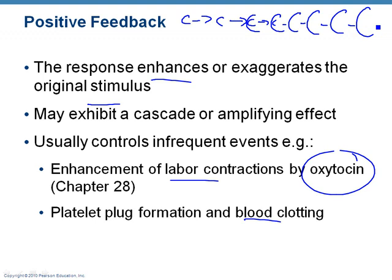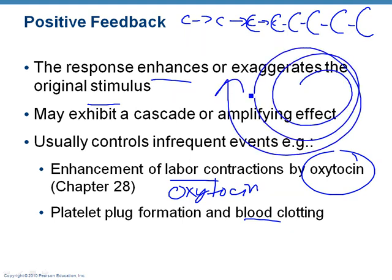Every time you contract, that sends a signal to the brain. The brain recognizes it's time to deliver and sends out a hormone called oxytocin via the endocrine system. Oxytocin goes to the uterus and causes it to contract harder. Now you've got a harder contraction — the brain picks that up, sends out more oxytocin, which causes a harder contraction, and so on. It just keeps feeding on itself and making the original stimulus stronger, because you want to get that baby out — that's positive feedback.